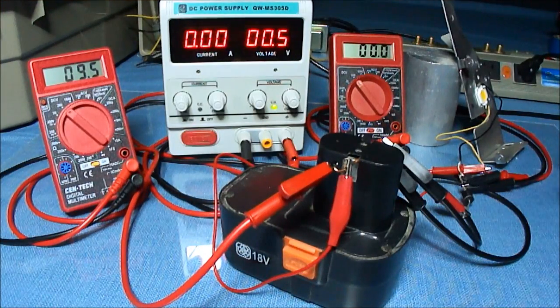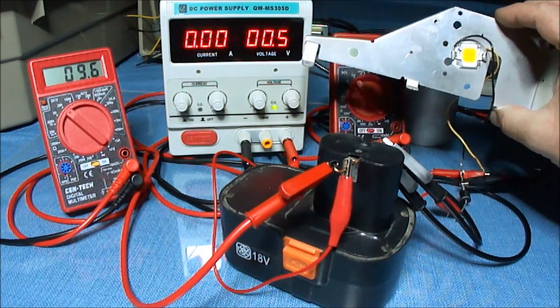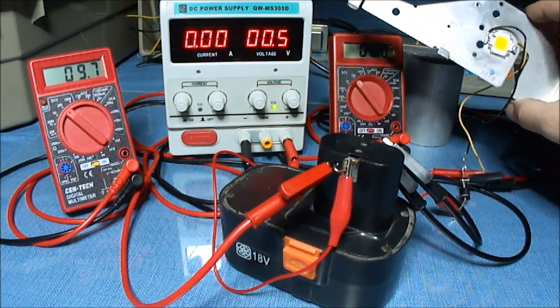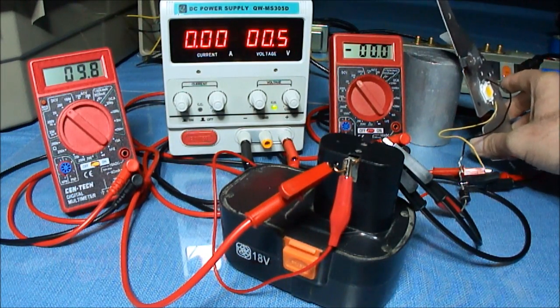Hey, how's it going? I got some of these 10 watt LEDs. The voltage range on there is 9 to 12 volts and 1,050 milliamps.